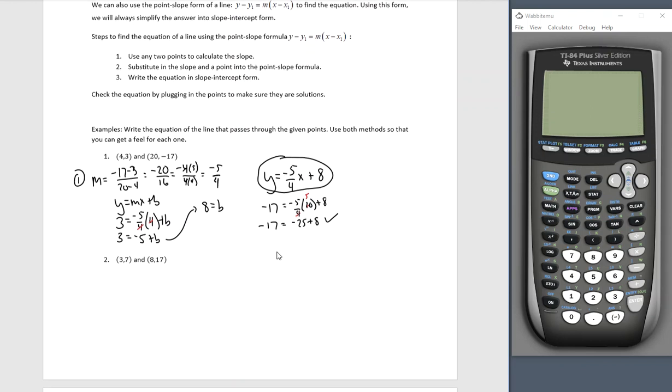But we could also use the point slope form of the equation of a line where we have y minus y1 equals m times x minus x1 to find the equation. Using this form, we will always simplify down into slope intercept form. For those of you going on to college algebra, for those of you that eventually have to go on to calculus, this is the one that you'll want to get familiar with now.